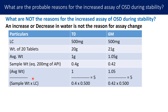The key factor in the calculation formula is: average weight ÷ sample weight × label claim. At T0: 1g ÷ 0.4g × 0.5g = 5. At six months: 1.05g ÷ 0.42g × 0.5g = 5. The factor is unchanged. Even though water content increased at six months, this factor remains constant, confirming that change in water content does not impact the drug product assay.